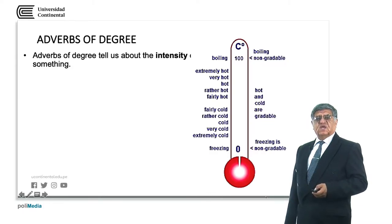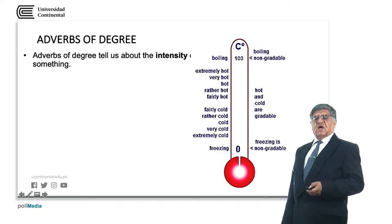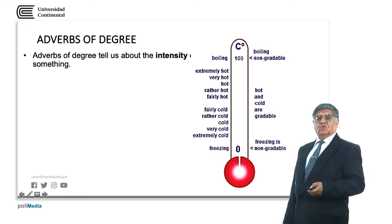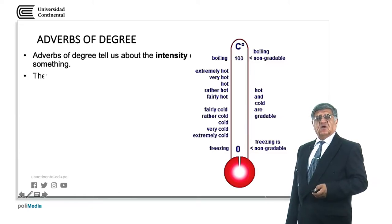We can say that hot and cold are gradable adjectives. But boiling point is non-gradable and freezing point is also non-gradable because it has no different intensity — it boils or it just freezes.